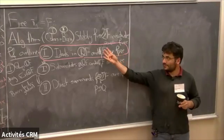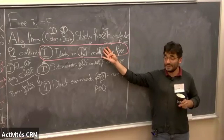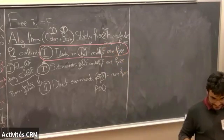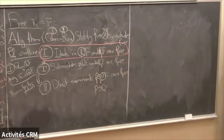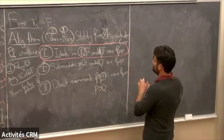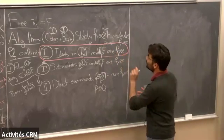So what does it mean for ideals to be free in a group ring? I want to focus on this and convince you that it actually means something interesting.